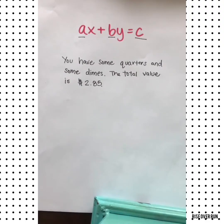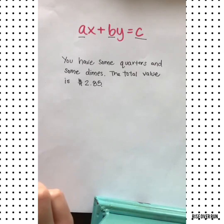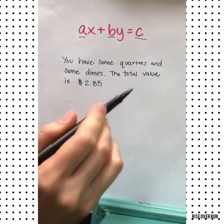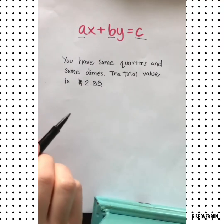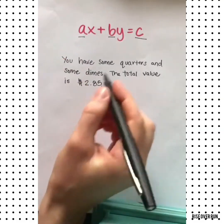Let's look at some word problems where standard form works best. You have some quarters and some dimes, and the total value is $2.85. We can write an equation for this situation in standard form.